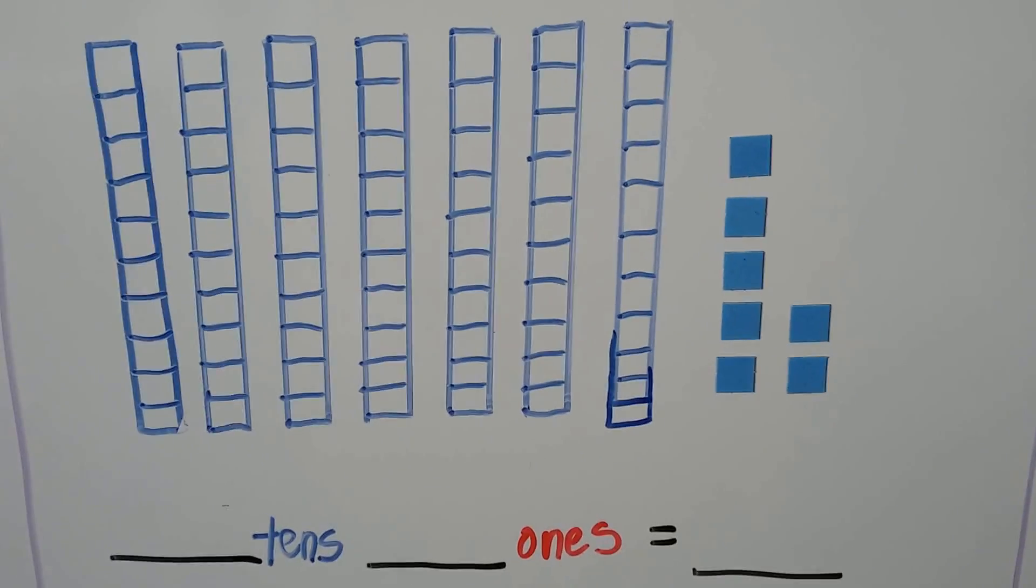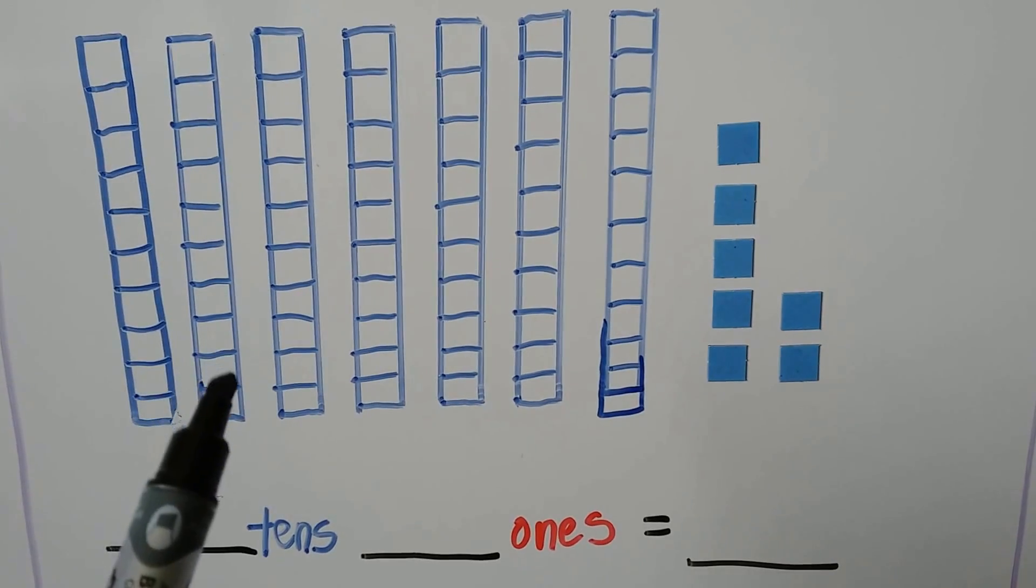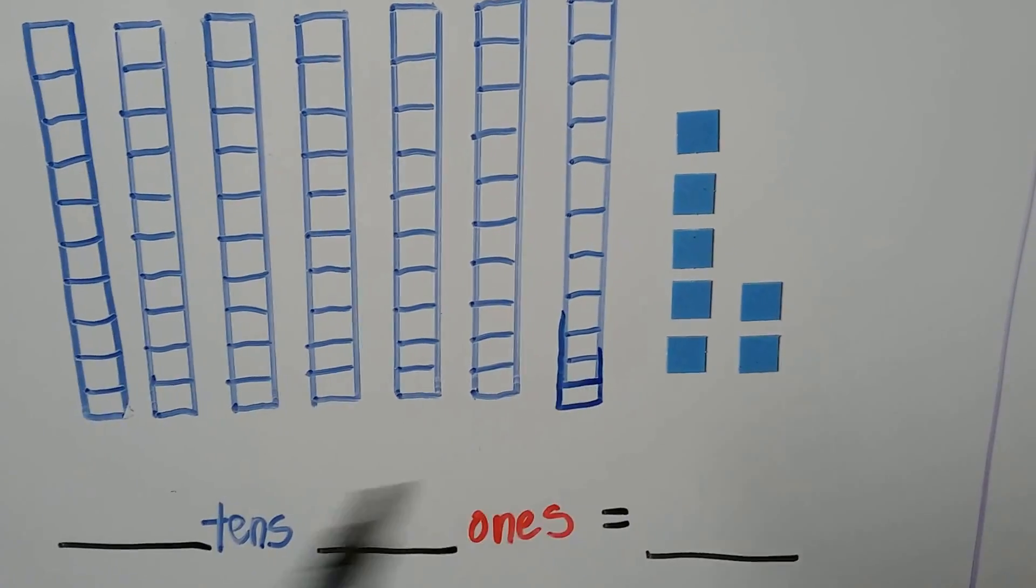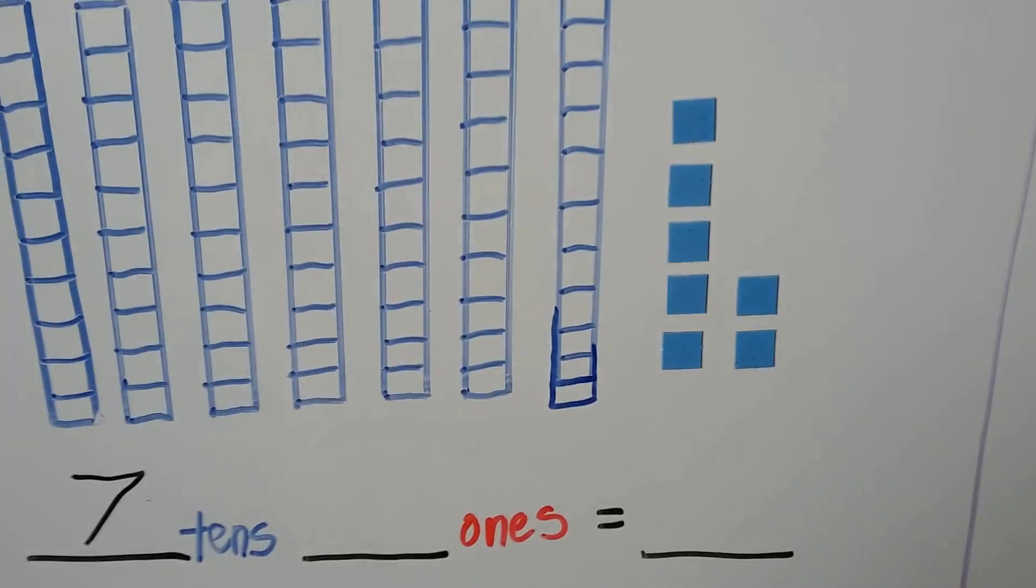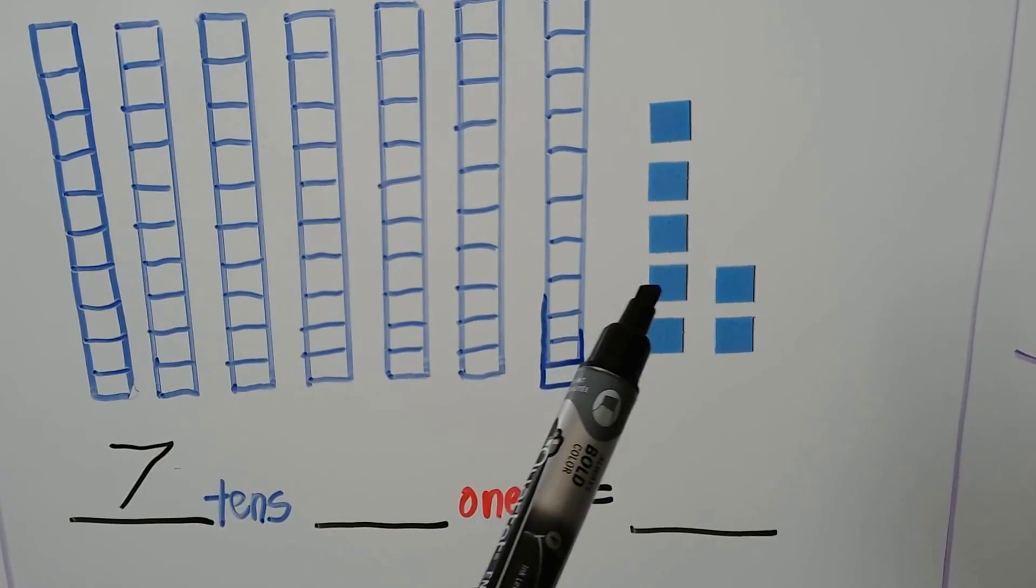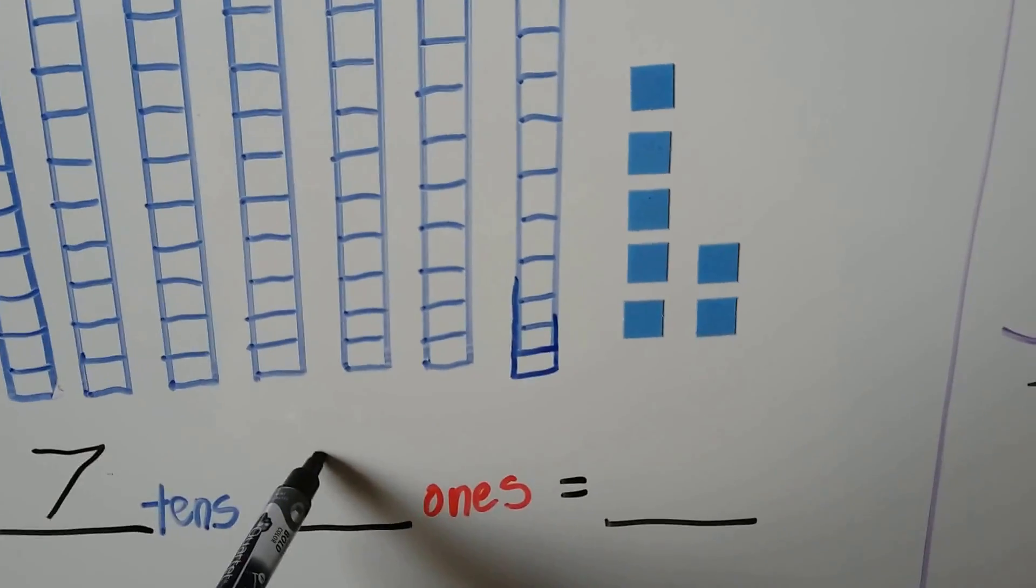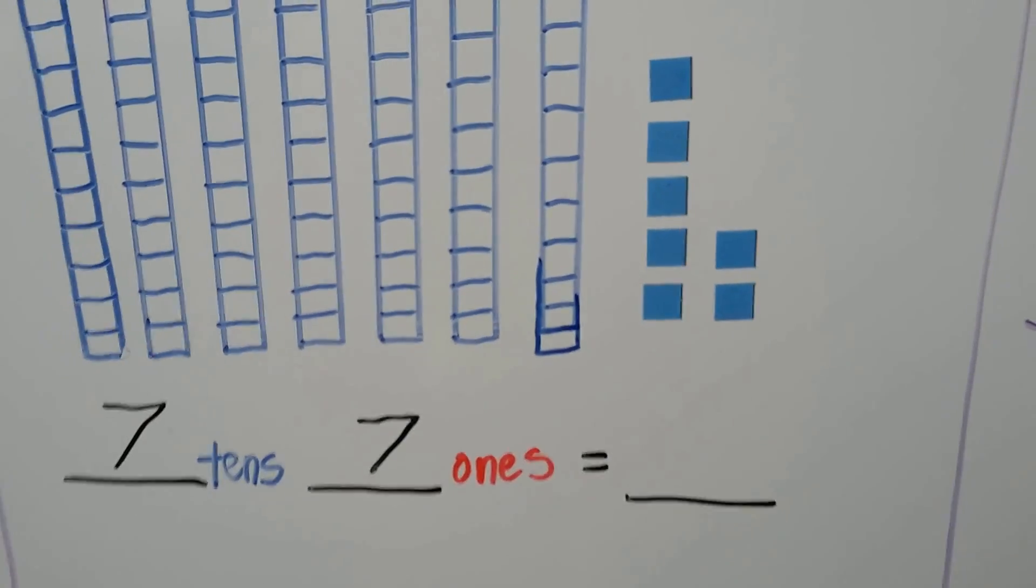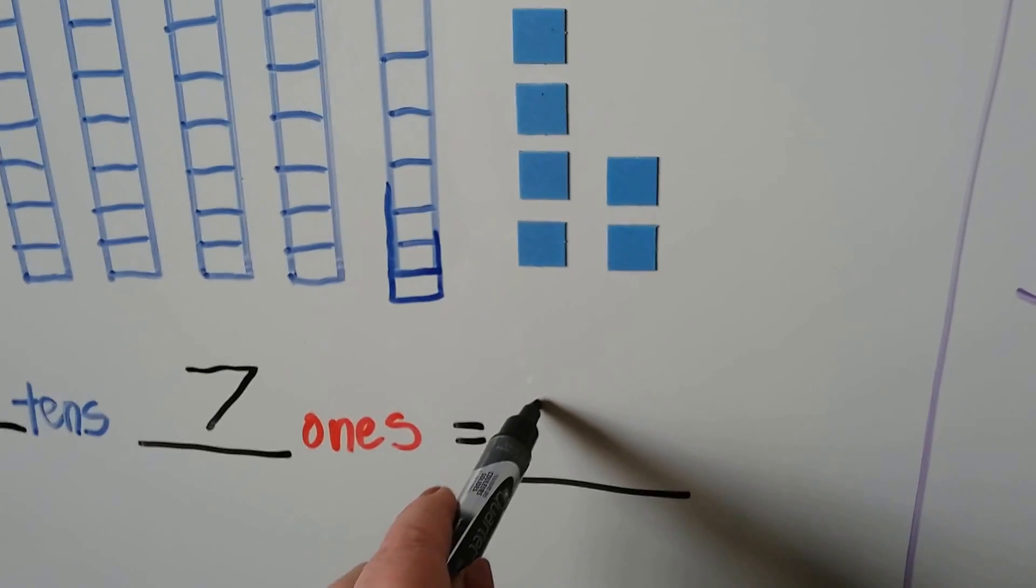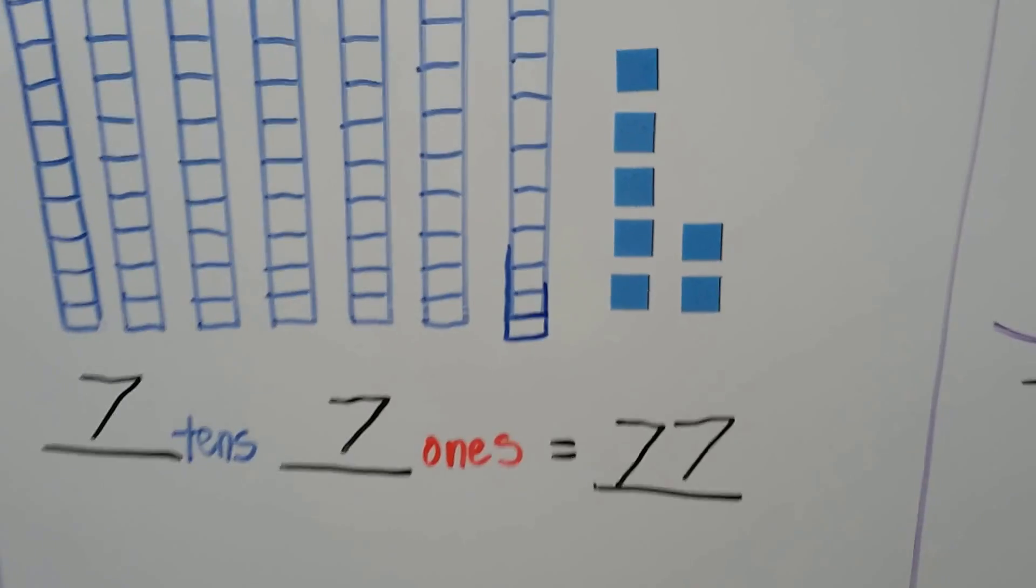How many tens do we have here? Each of these are a rod of 10. We have 1, 2, 3, 4, 5, 6, 7. We have 7 rods of 10. And how many ones do we have? One, 2, 3, 4, 5, 6, 7. We have 7 tens and 7 ones. What number do we have? We put a 7 in the tens place and a 7 in the ones place. We have 77.